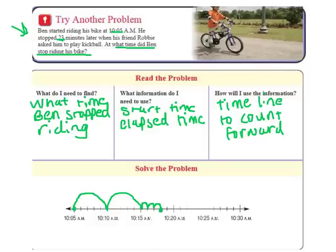So if this landing right here was at 10:15, this one will be 10:16. This one will be 10:17. This one will be 10:18. So 10:18 is the time that Ben stopped riding his bike. And I want to look and see if it's AM or PM. We're talking AM here. So he stopped riding his bike at 10:18 AM.